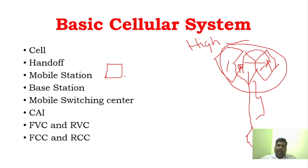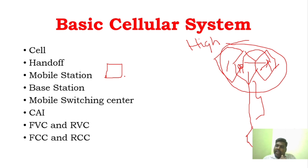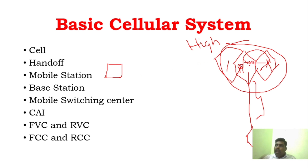And the base station - what is that? It is the tower. The base station will have multiple antennas - array antennas. Each antenna serves all the devices. The base station has a transmit antenna and a receive antenna. The base station acts as a bridge between all the mobile users. If there are 100 users, the base station bridges between those users.